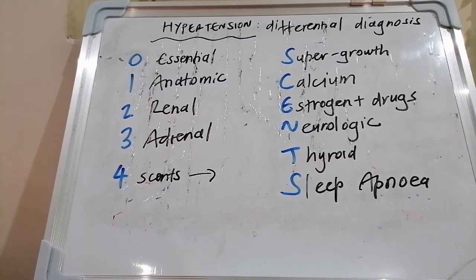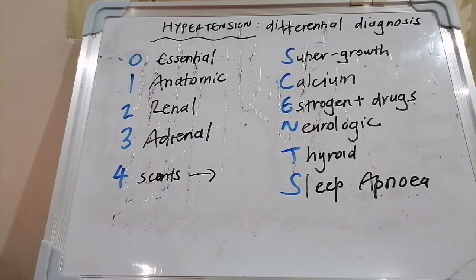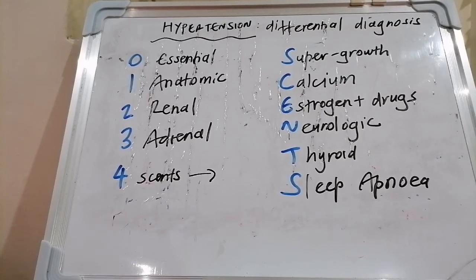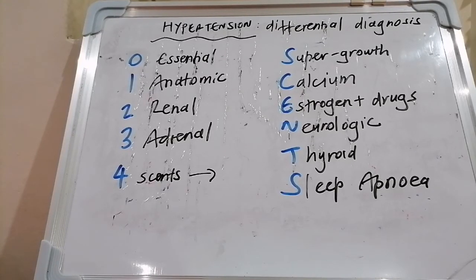Then consider 24-hour urine metanephrines or plasma fractionated metanephrines. Other endocrine workups include calcium, albumin, parathyroid hormone, TSH, free T4, 24-hour urine cortisol, 1 mg dexamethasone suppression test, overnight dexamethasone suppression test, and late-night salivary cortisol — all for Cushing's. Also check IGF-1.